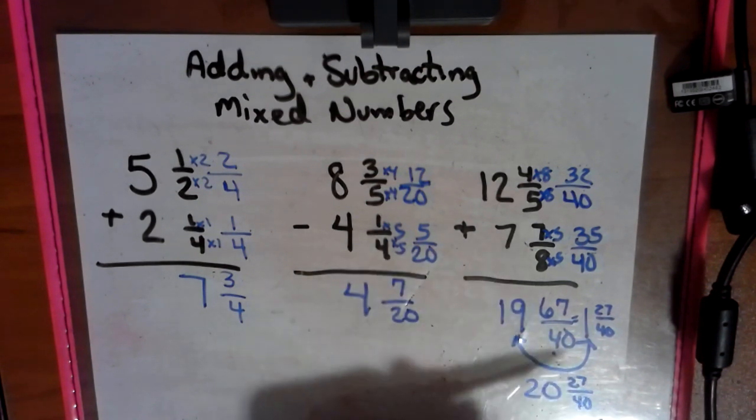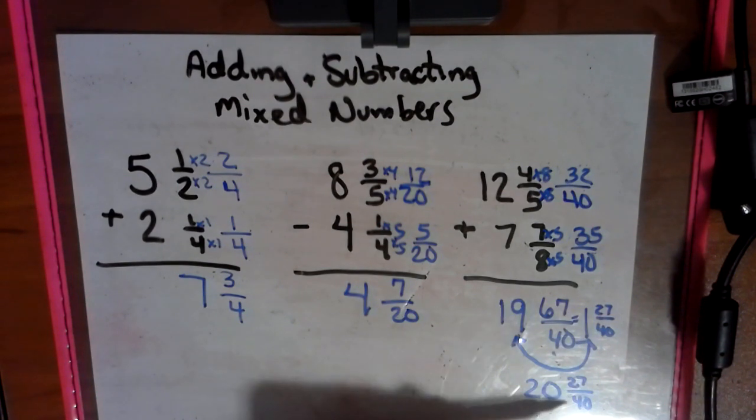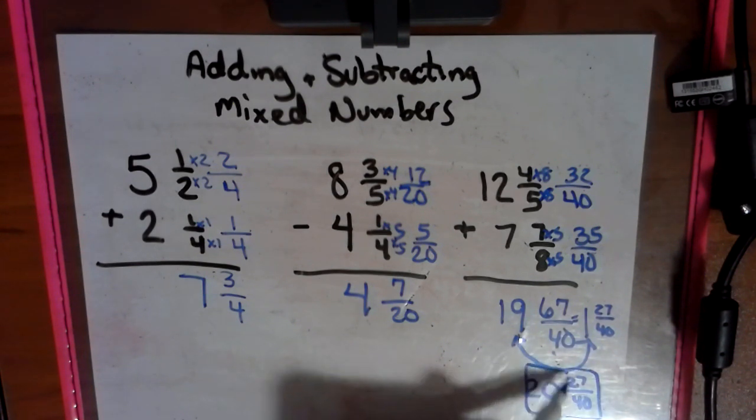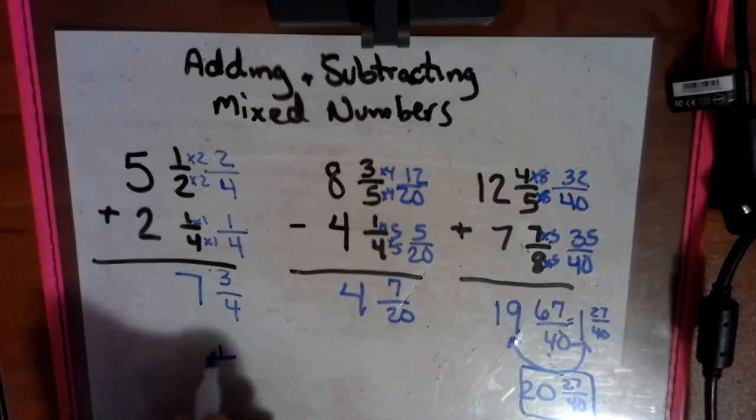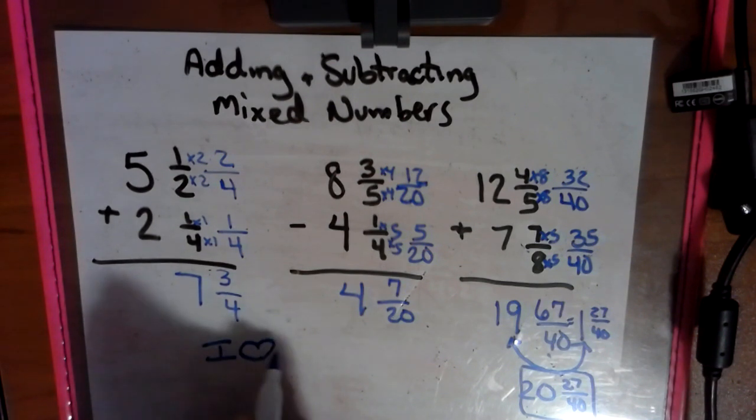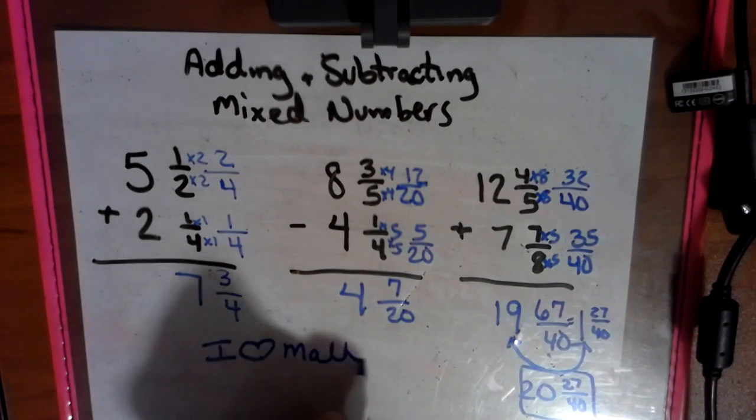We think, can this be simplified? Twenty-seven has a nine and a three. Neither can work for forty. Twenty-seven has a one and a twenty-seven. Nothing works for forty. So we have our simplified fraction. And as always, this is Mrs. Bobby, and I love math.